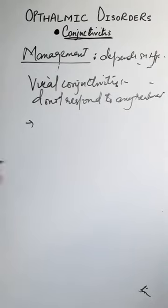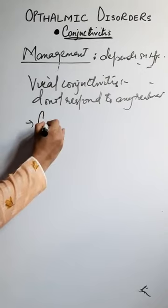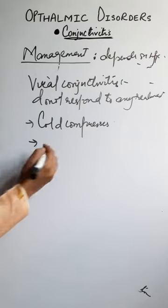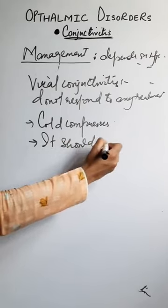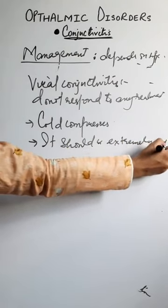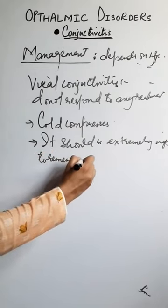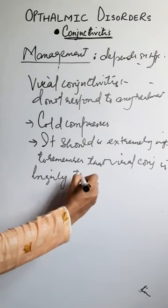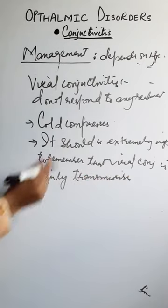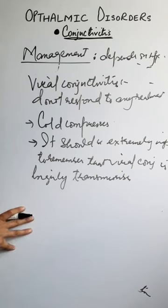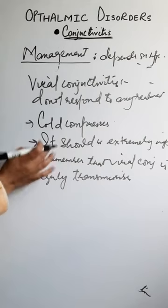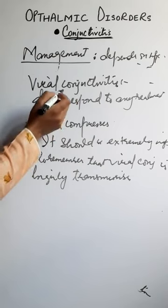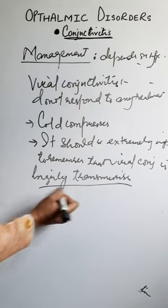Now, how do we manage the patient regardless of the type of conjunctivitis — we will use cold compresses. It is extremely important to remember that viral conjunctivitis is highly transmissible. Viral conjunctivitis does not respond to any treatment, but we can prevent it. We use cold compresses — not only in viral conjunctivitis but overall. I focus a bit on viral conjunctivitis because it is seen to be very transmissible.